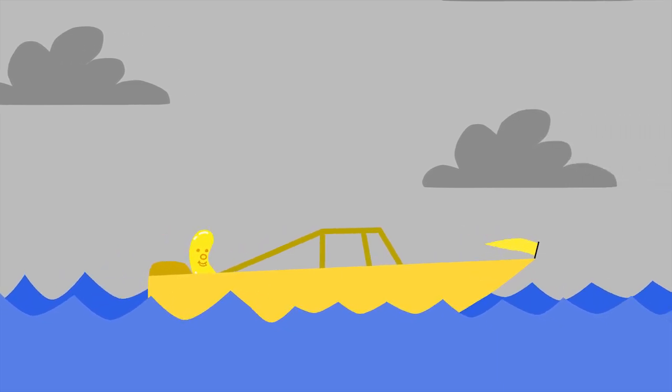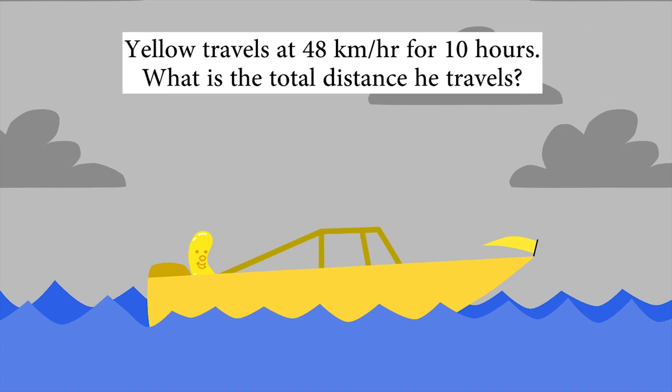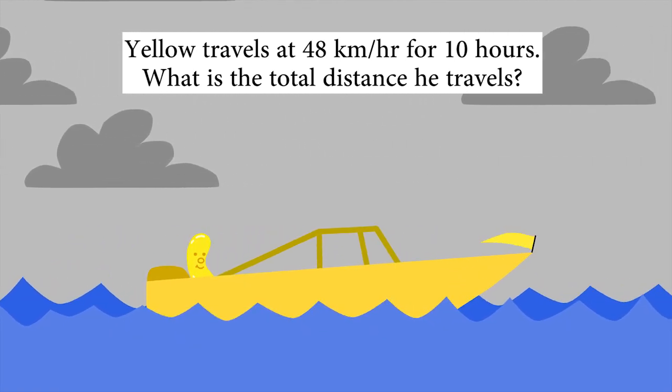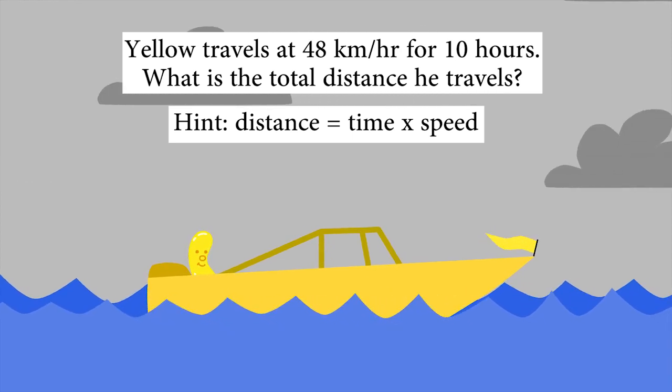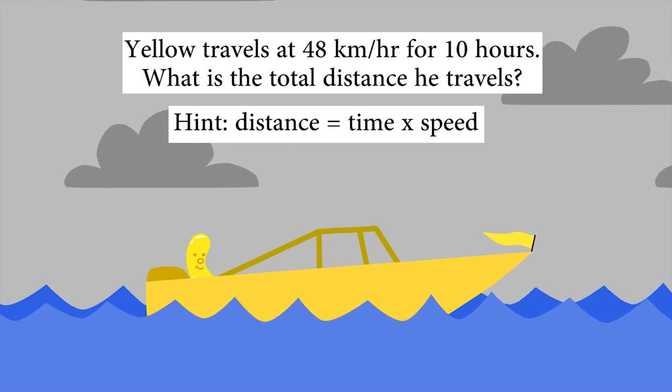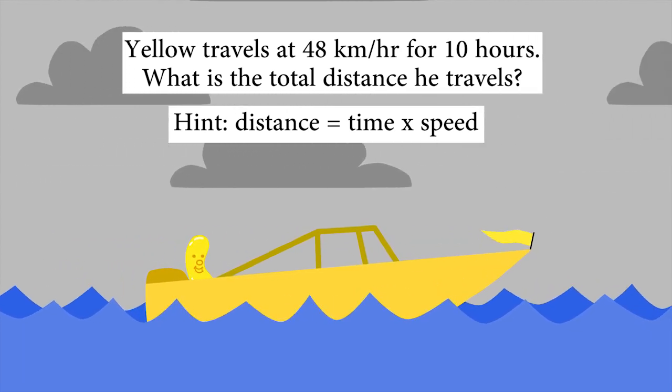I like going on trips in my yellow speed boat. If I travel at 48 kilometres per hour for 10 hours, how far do I go? I'll give you a hint. If you're stuck, you can use the formula: the distance I travel equals the length of time I spend travelling multiplied by my speed.